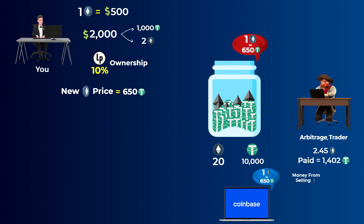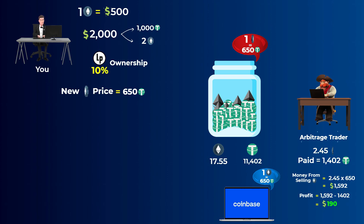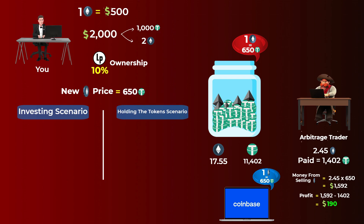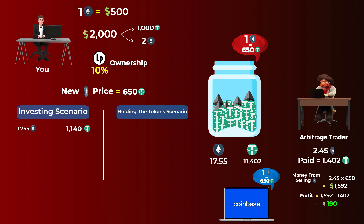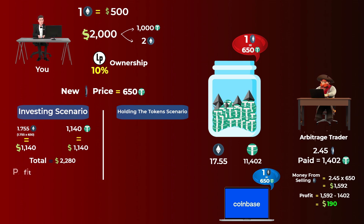This arbitrage trader can make a profit by selling the Ethereum at the current price of $650, making an easy profit of $190. Now the pool has 17.55 Ethereum and 11,402 Tether tokens — we get those numbers by subtracting the 2.45 Ethereum from the initial 20, and adding the 1,402 Tether paid by the trader. When you cash out your 10% share, you will get 1,140 Tether tokens and 1.755 Ethereum. The 1.755 Ethereum at $650 gives $1,140, plus $1,140 in Tether, for a total of $2,280 — a profit of $280.